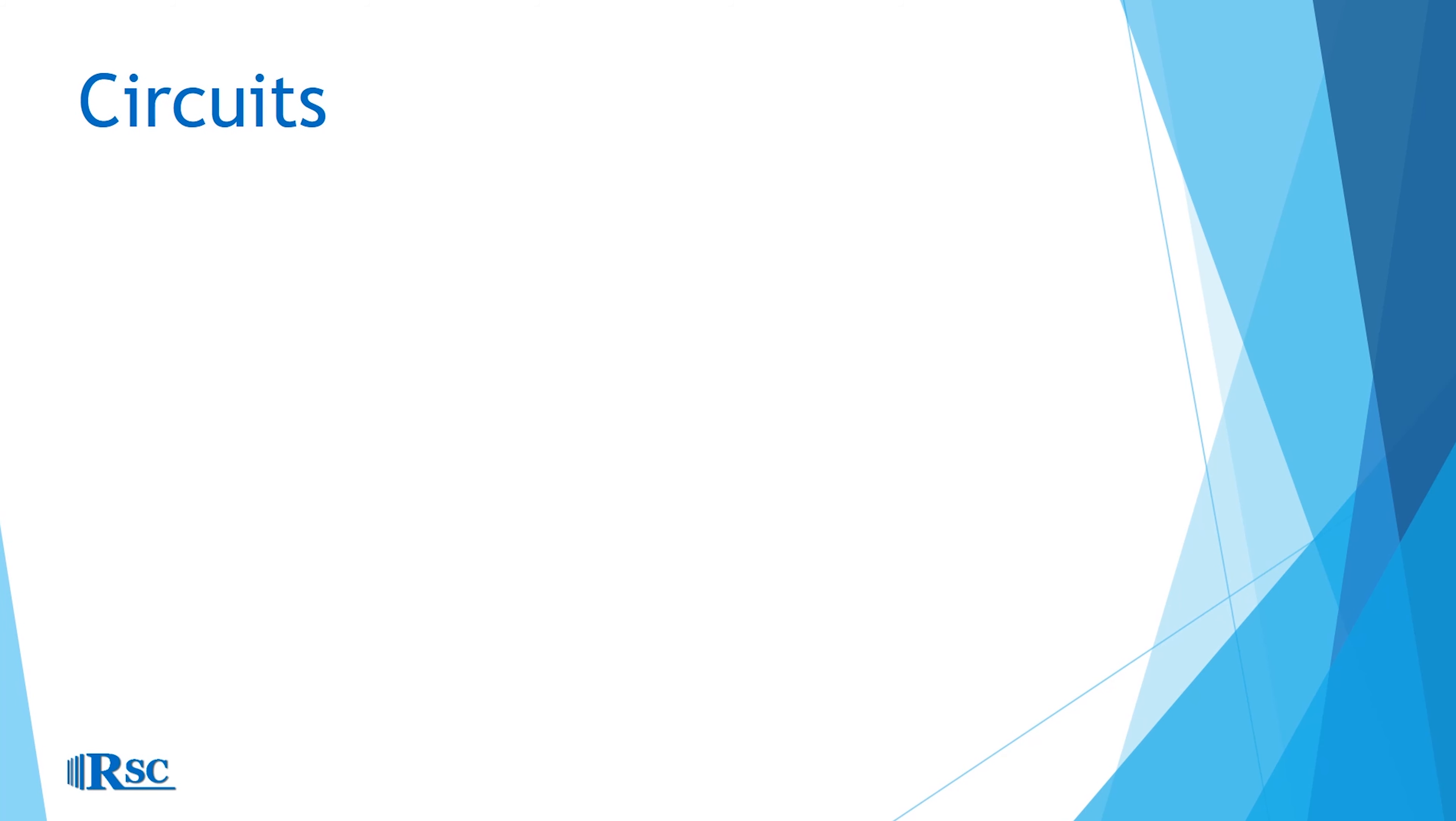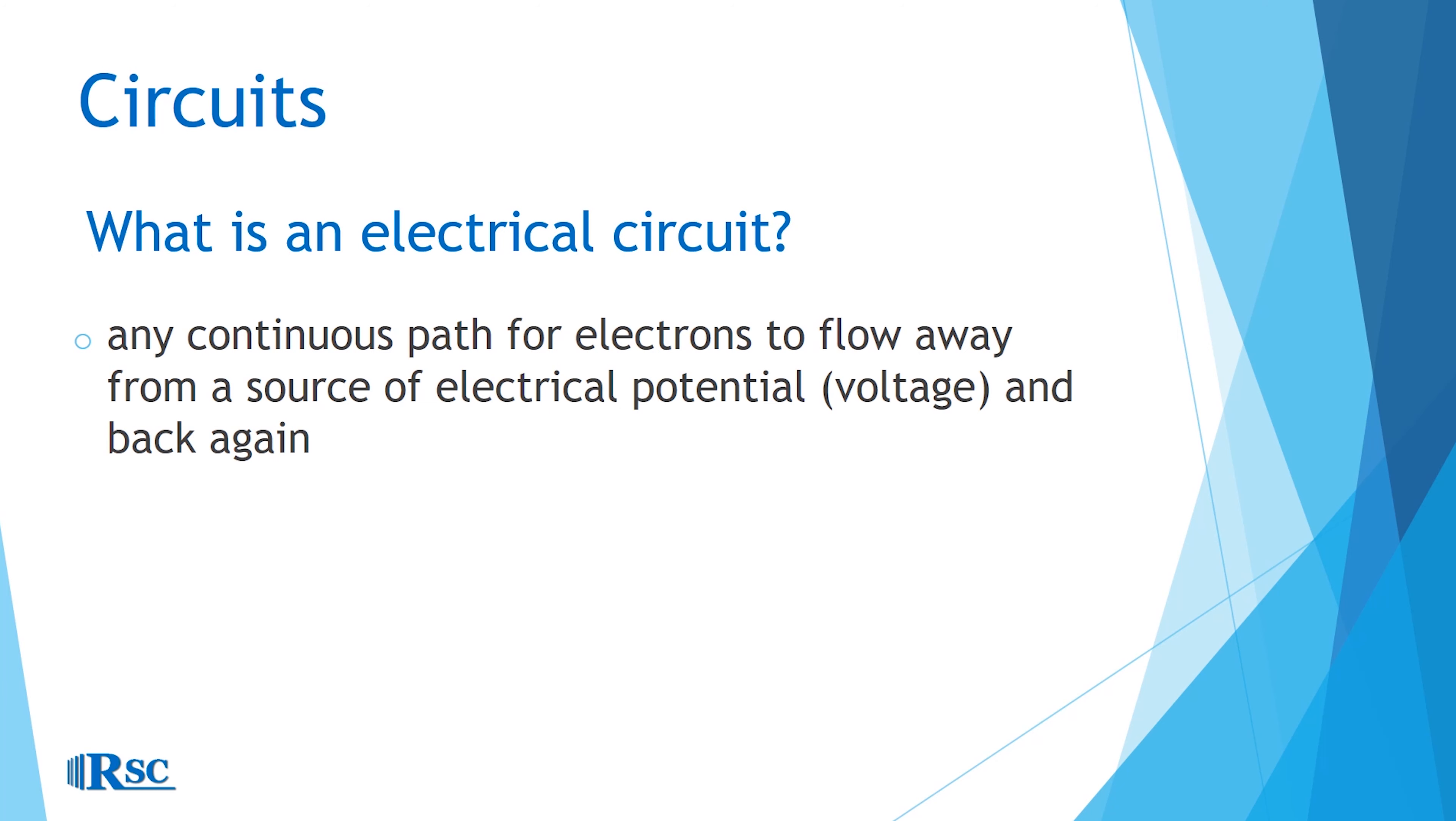Okay, so we know what a circuit is. Now, what do you think an electrical circuit is? It is any continuous path for electrons to flow away from a source of electrical potential (voltage) and back again.